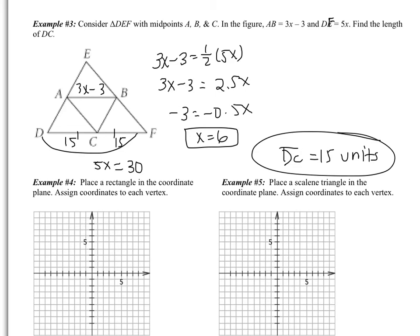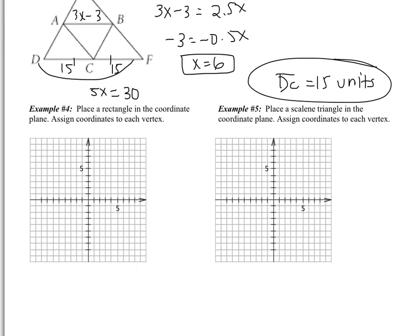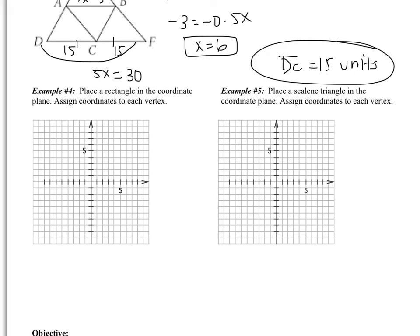So that was the midsegment. Now we have to do the coordinate proof, and then we are finished. Coordinate proofs have to do with shapes in the coordinate plane. So looking at example 4, it says place a rectangle in the coordinate plane and assign coordinates to each vertex. So all that means is I have to draw in a rectangle. And then assign coordinates to the vertices. So this is (0, 0).